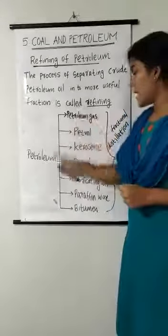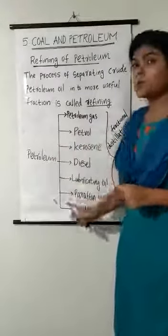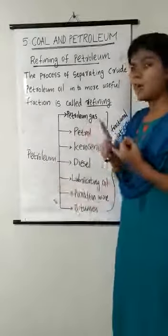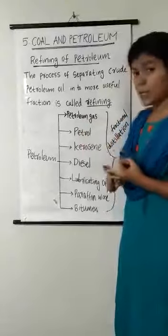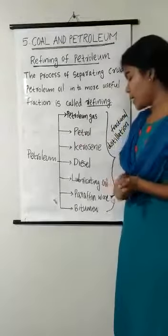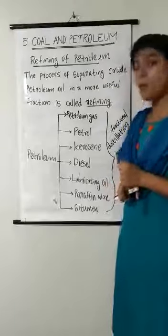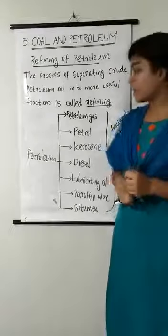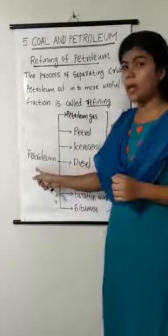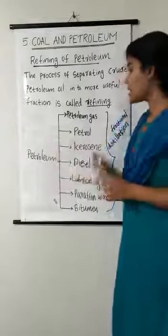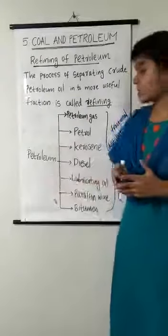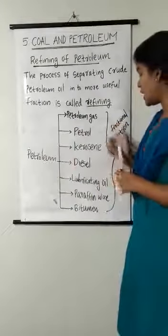These are the various useful fractions obtained from petroleum: petroleum gas, petrol, kerosene, diesel, lubricating oil, paraffin wax, and bitumen. These are separated from petroleum by the process of fractional distillation.